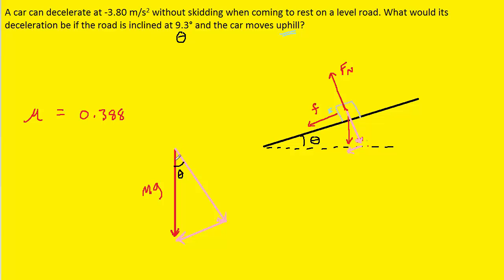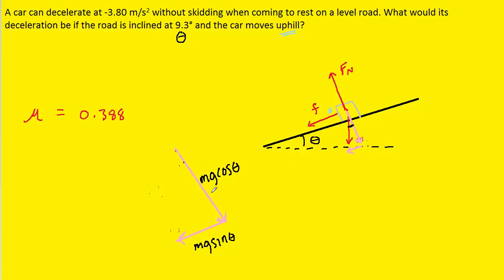Zooming in on the diagram, we have the gravitational force pointing straight down, with the component of mg perpendicular to the ramp and the component parallel to the ramp. This angle is equal to the angle of incline, marked as theta. The perpendicular component is adjacent to theta, so it equals mg cosine theta. The parallel component is opposite theta, so it equals mg sine theta. Once you have those components, you can discard the original mg force vector.